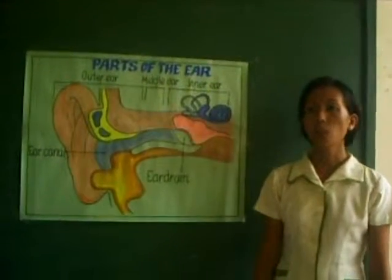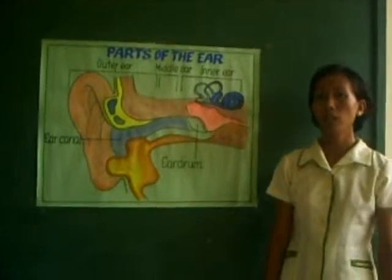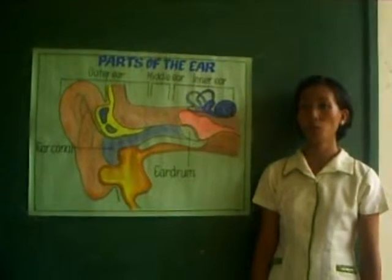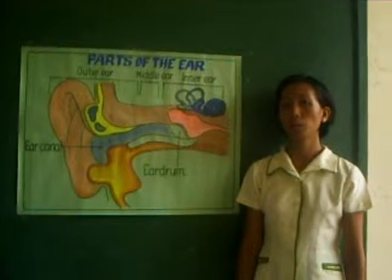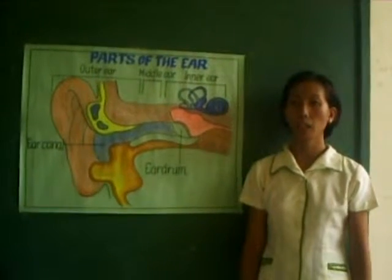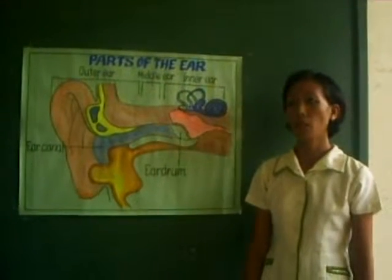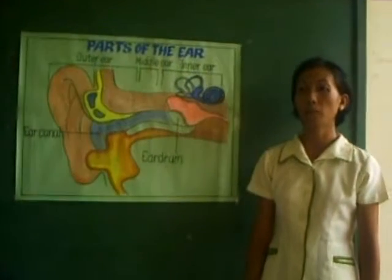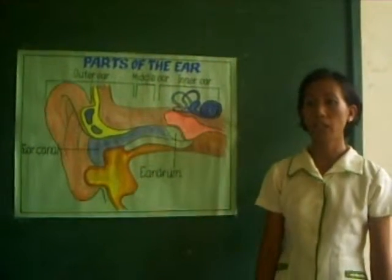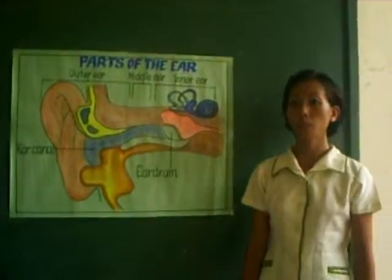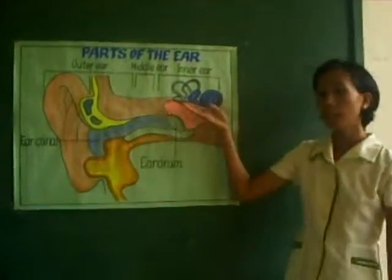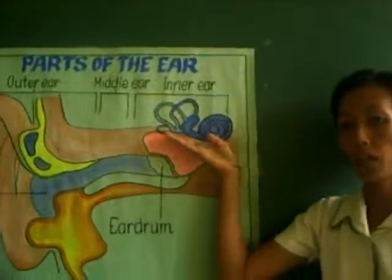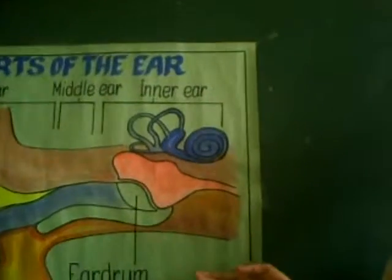The three smallest bones in the body are the ossicles, which transmit the vibratory motion of the eardrum to the fluid of the inner ear. These bones are named for their shapes: the hammer, or malleus; the anvil, or incus; and the stirrup, or stapes. The inner ear is a maze of bony chambers called the osseous labyrinth.